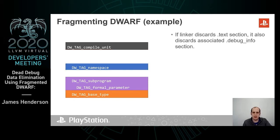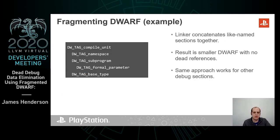That means when you remove the text section, the linker is also able to remove the debug info section, and is then able to concatenate them back together again using its standard approach. The result is a smaller DWARF with no dead references.